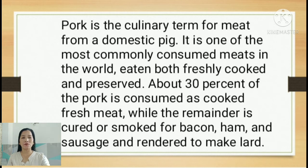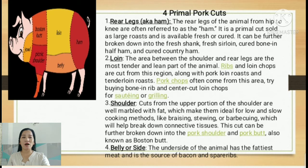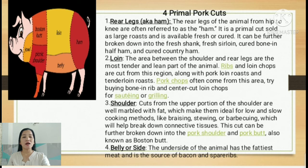Pork has four primal cuts. The first primal pork cut is the rear leg or ham — the rear leg of the animal from hip to knee. It is sold as large roasts and is available fresh or cured. It can be broken down into fresh shank, fresh sirloin, cured bone-in half ham, and cured country ham. In the local market this is known as 'pigi.'